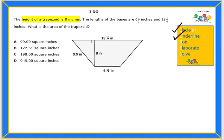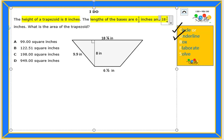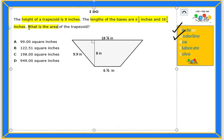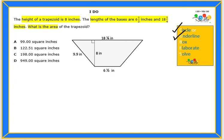The height of the trapezoid is 8 inches. The length of the bases are 6 1⁄2 inches and 18 1⁄4 inches. What is the area? Then we box our question. What is the area of the trapezoid?